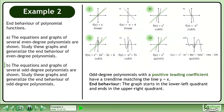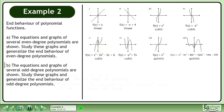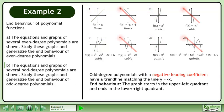Odd degree polynomials with a positive leading coefficient have a trend line matching the line y equals x. The end behavior is that the graph starts in the lower left quadrant and ends in the upper right quadrant. Odd degree polynomials with a negative leading coefficient have a trend line matching the line y equals negative x. The end behavior is that the graph starts in the upper left quadrant and ends in the lower right quadrant.